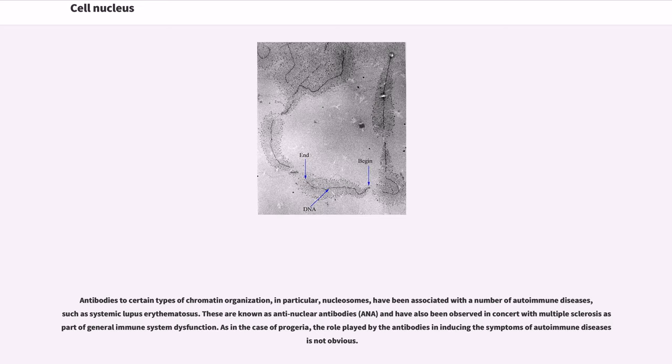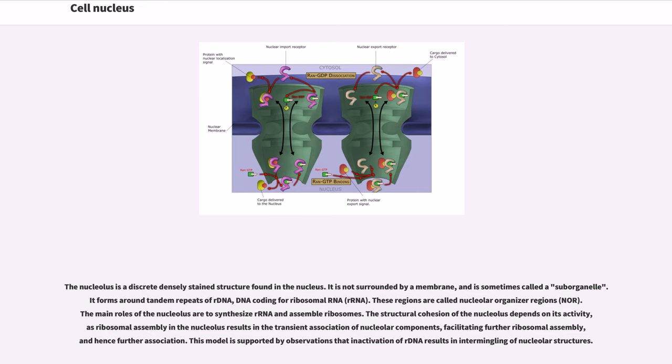The nucleolus is a discrete densely stained structure found in the nucleus. It is not surrounded by a membrane, and is sometimes called a sub-organelle. It forms around tandem repeats of rDNA, DNA coding for ribosomal RNA, rRNA. These regions are called nucleolar organizer regions, NOR. The main roles of the nucleolus are to synthesize rRNA and assemble ribosomes. The structural cohesion of the nucleolus depends on its activity, as ribosomal assembly in the nucleolus results in the transient association of nucleolar components, facilitating further ribosomal assembly, and hence further association. This model is supported by observations that inactivation of rDNA results in intermingling of nucleolar structures.